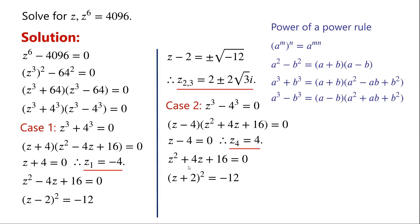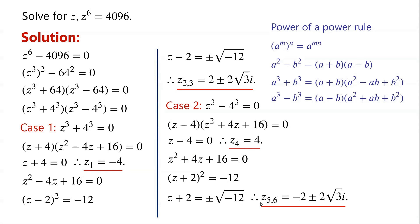z squared plus 4z can be written as (z plus 2) squared minus 4. So (z plus 2) squared minus 4 plus 16 equals 0, giving (z plus 2) squared plus 12 equals 0. Moving 12 to the right-hand side and taking the square root of both sides, we get z plus 2 equals plus or minus root of minus 12. Therefore z equals minus 2 plus or minus 2 root 3 times i.